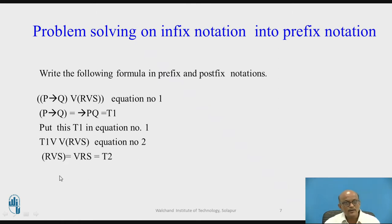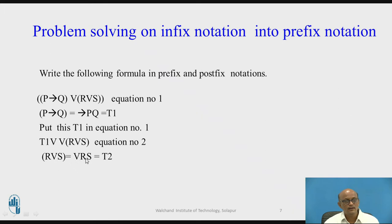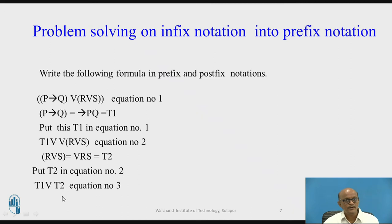Now next, R OR S will be evaluated. Converting R OR S into prefix: the operator OR comes first, then the operands R and S — giving OR RS, say equal to T2 as intermediate result. Now substitute T2 in equation number two, so it becomes T1 OR T2 — that is equation number three.